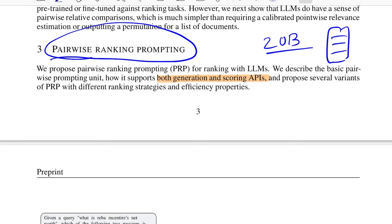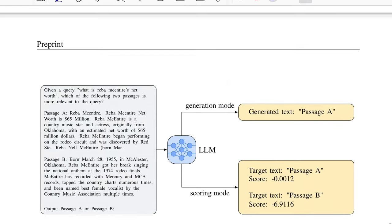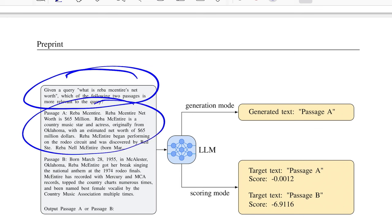As I discussed, you had pointwise rankers, listwise rankers - you also have pairwise rankers. This is how the illustration of it looks like. You have the query, you have the first passage, you have the second passage, and then you ask a trigger question saying "Output passage A or B depending on which is more relevant."